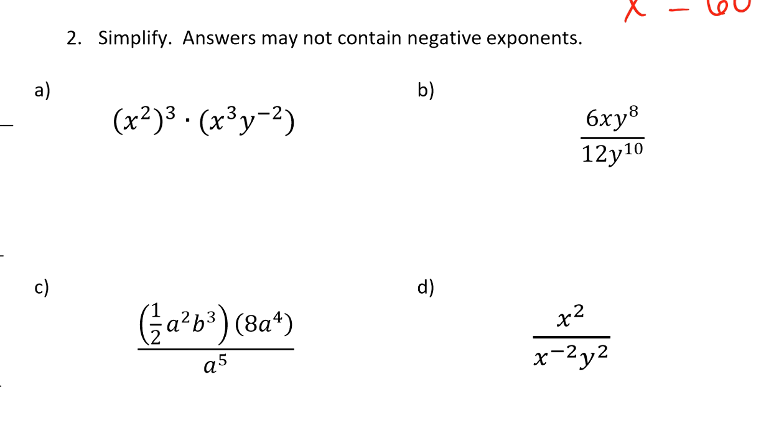Question 2 asks us to simplify. Answers may not contain negative exponents, and also implicit here is the simplest form won't contain any remaining giant 1.